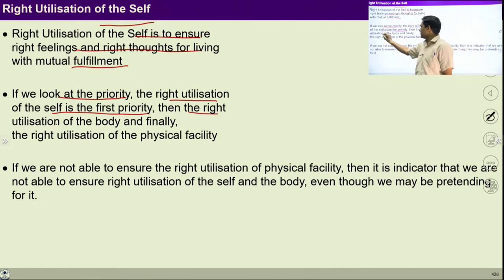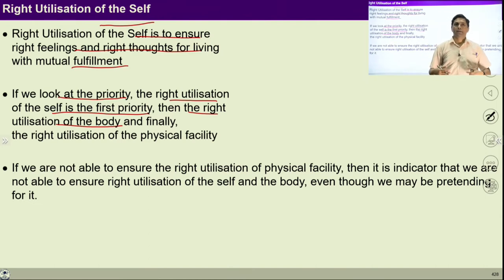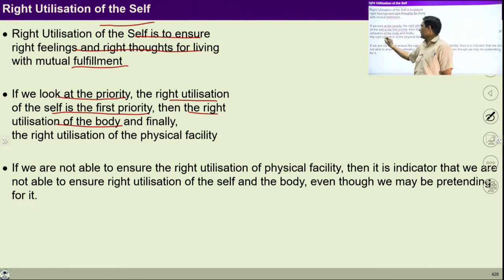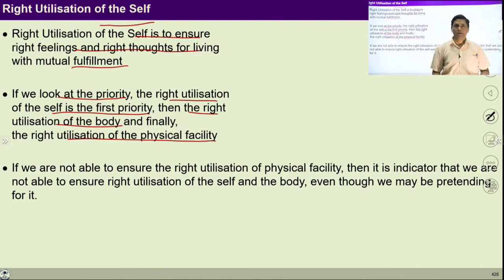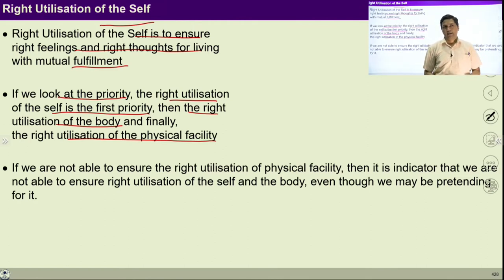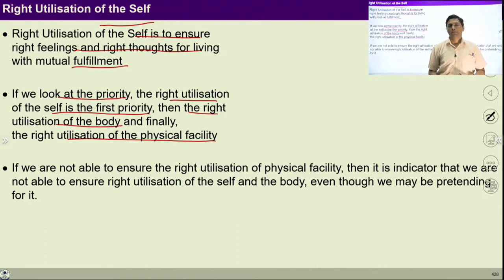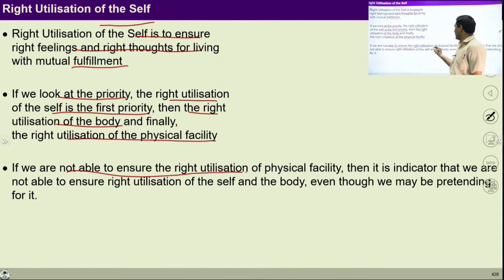That is why right utilization of self is at first priority, then right utilization of body. I can right utilize my body only if I am in harmony as a self, as a consciousness. With the right utilization of self and right utilization of the body, finally I can right utilize the physical facilities available to us. If we ensure these three right utilizations — right utilization of self, right utilization of body, and right utilization of physical facilities — then we can participate in larger order in a harmonious manner. If each one of us ensures right utilization of the self, body and physical facility, it will ensure enough physical facility for everyone and there would be a possibility to live with mutual prosperity and mutual happiness.